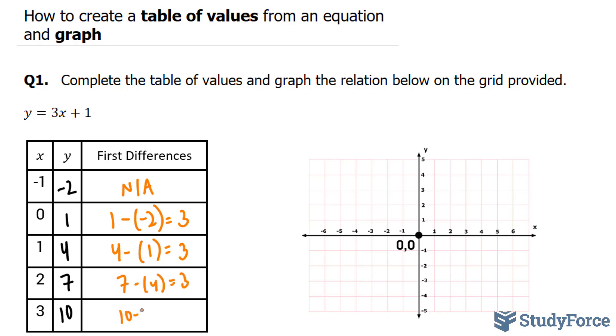And 10 minus 7 is equal to 3. To graph this, I'll take this point, negative 1 and negative 2, so negative 1 and down negative 2. Our next point is 0 and 1, so 0 and 1.